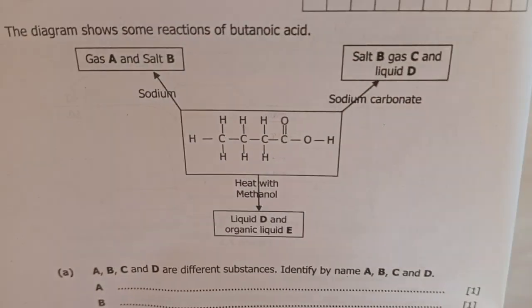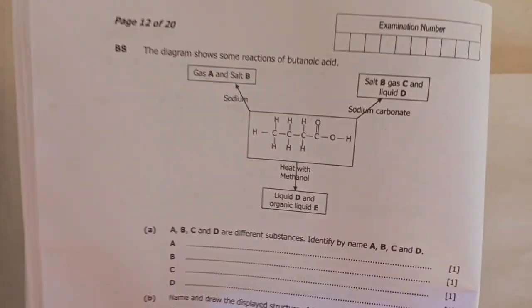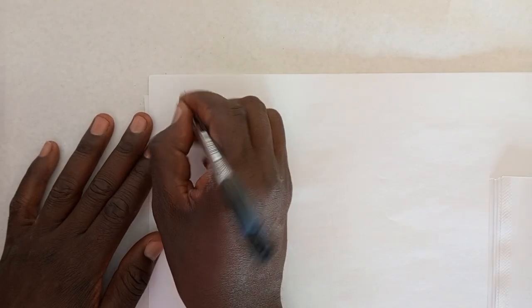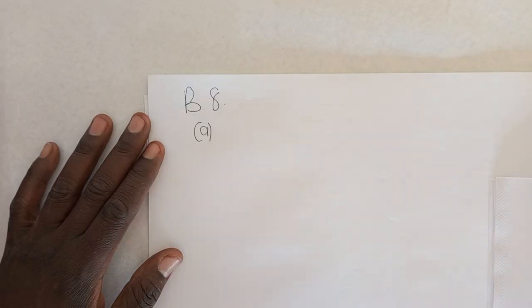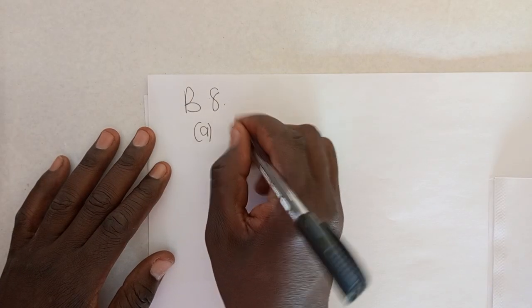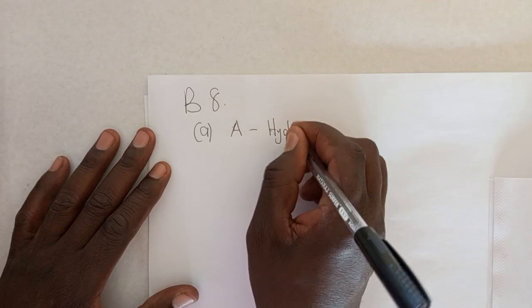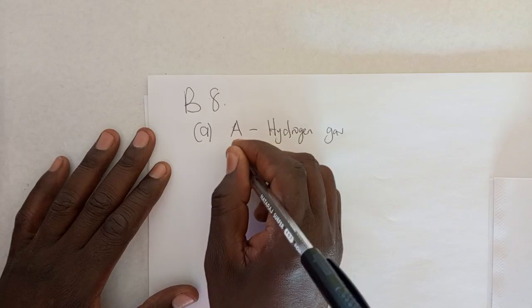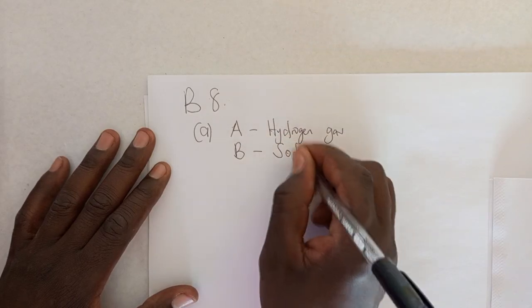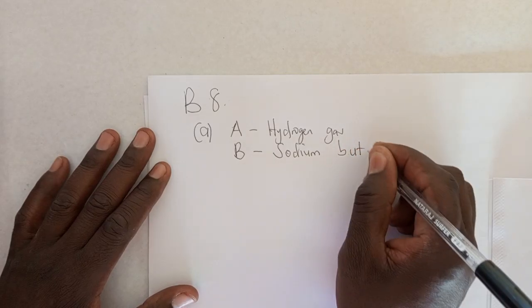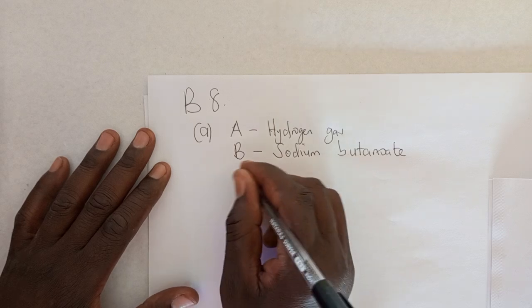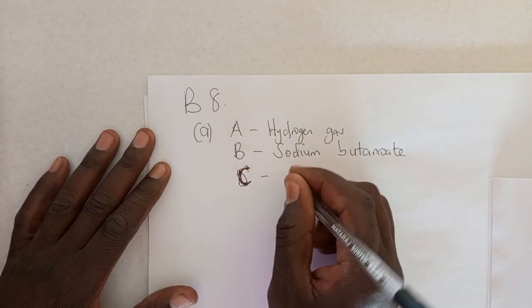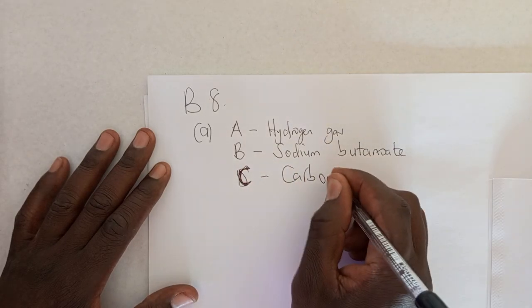Let's get into writing this. We are on question B8 where we are asked to find A, B, C, and D. A is hydrogen gas, B is sodium butanoate, C is carbon dioxide, and D is water.